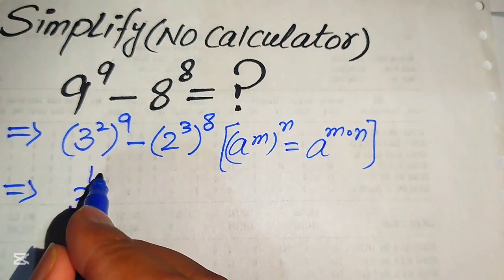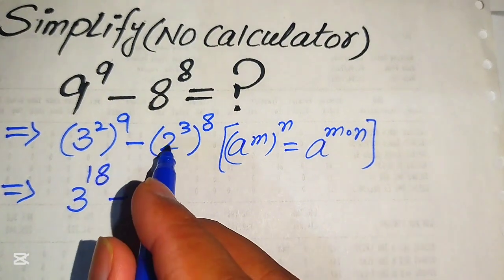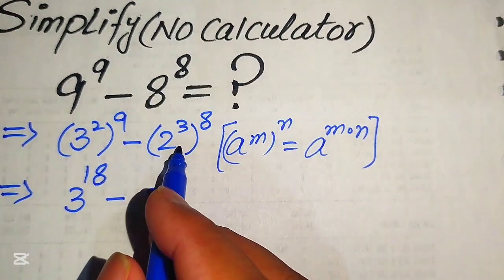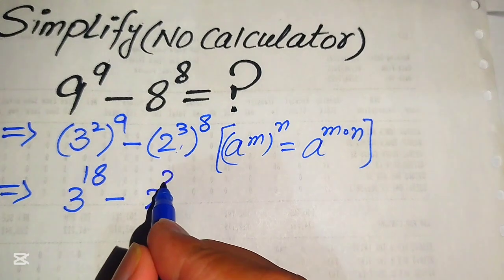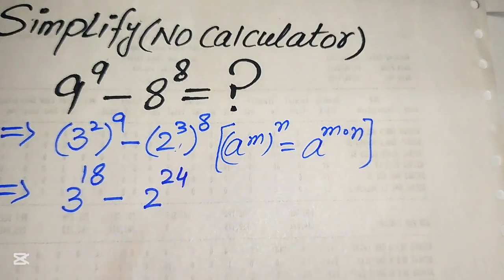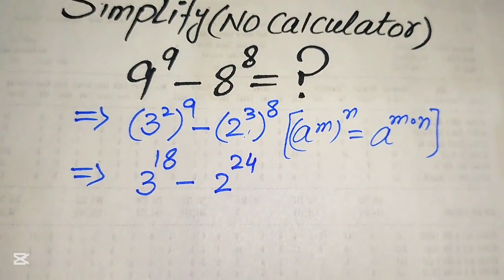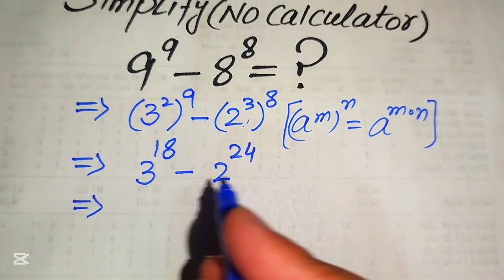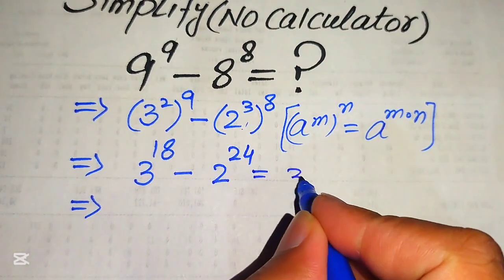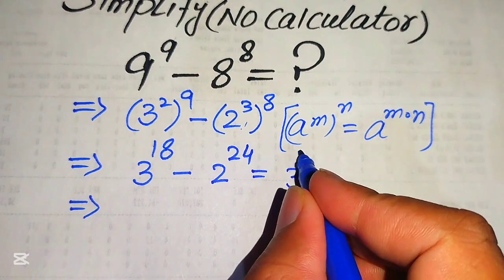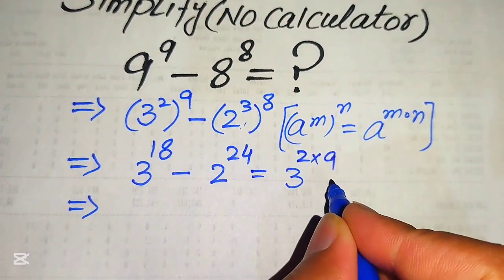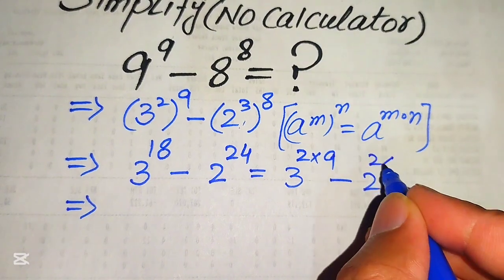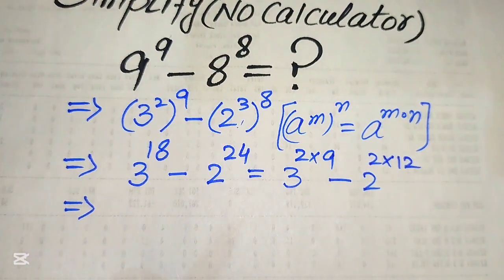We get 3 to the power of 2 times 9, which becomes 3 to the power of 18, minus 2 to the power of 3 times 8, which becomes 2 to the power of 24. Further, we break the exponents: 18 is written as 2 times 9, and 24 is written as 2 multiplied by 12.